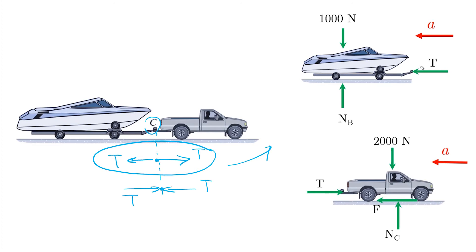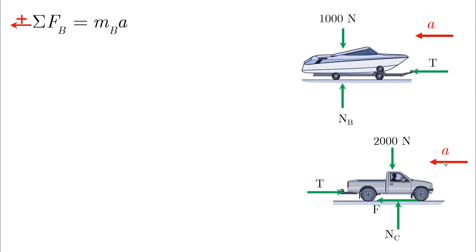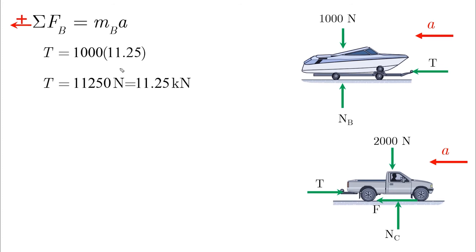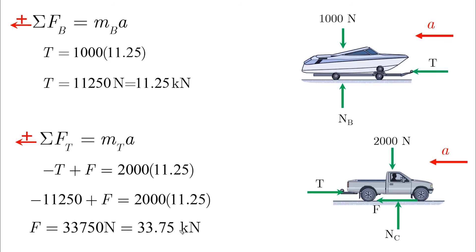For the boat, we have the normal force, the weight, the tension, and the acceleration. For the truck, we have the opposite tension, the normal force, the weight, the friction force, and the same acceleration as the boat. Applying the summation of forces to the boat with positive to the left, the tension is the only horizontal force, giving T = M × A, which yields a tension of 11.25 kN. For the truck, the opposite tension plus the friction force equals M × A, giving the friction force as 33.75 kN.